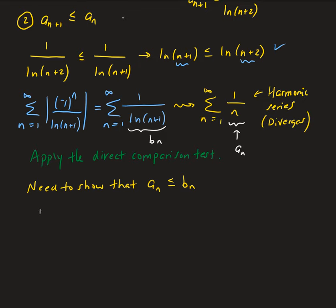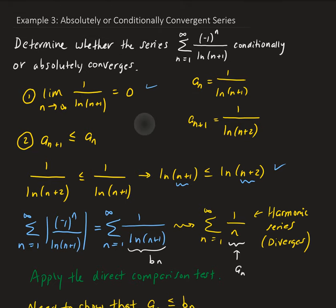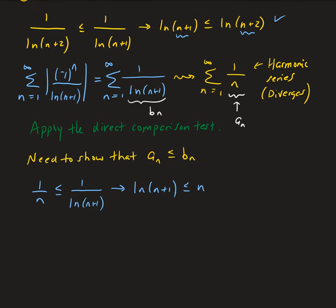We have 1 over n less than or equal to 1 over natural log of n plus 1. This is the same as natural log of n plus 1 less than or equal to n. For n going from 1 to infinity in our original series, this is a true statement because natural log increases at a slower rate than n — n is a linear function.